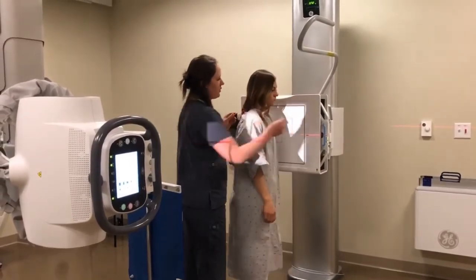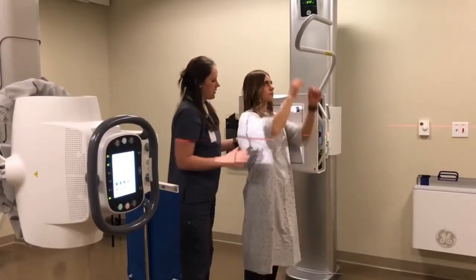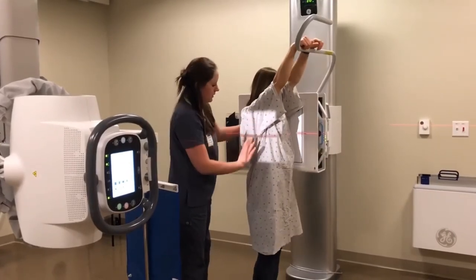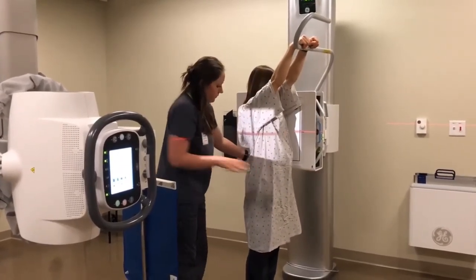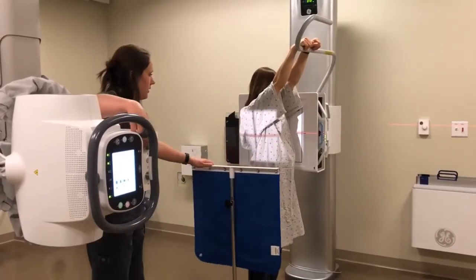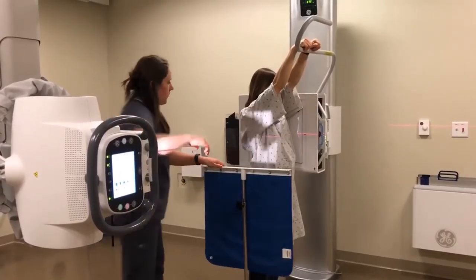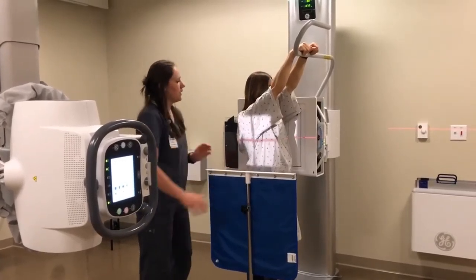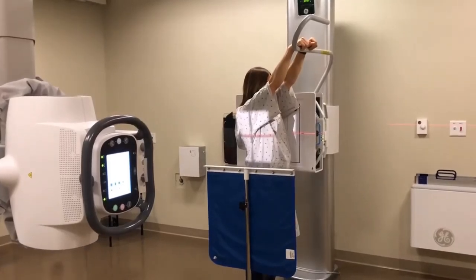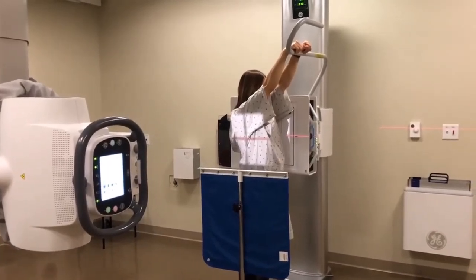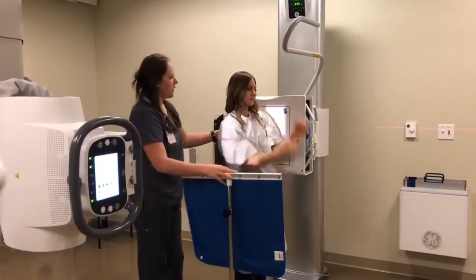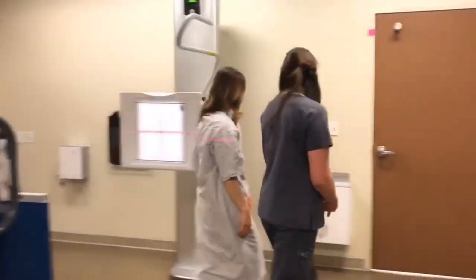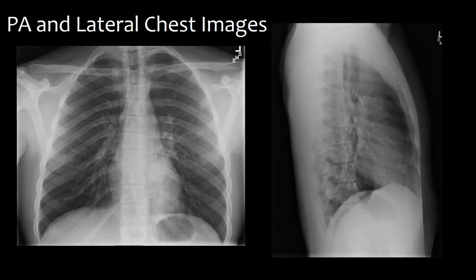The patient is then instructed to place her left side against the image receptor with arms elevated, removing them from the exposure field. The technologist ensures the patient is properly positioned in a true lateral. The lead shield is placed next to the patient. The same double breathing technique is utilized and the exposure is made on full inspiration.